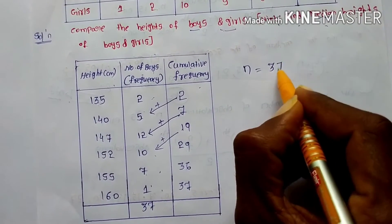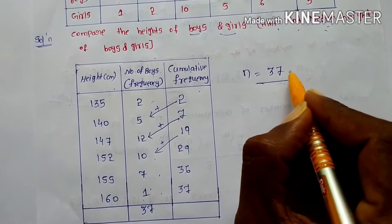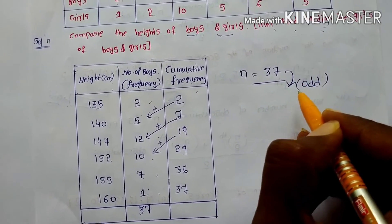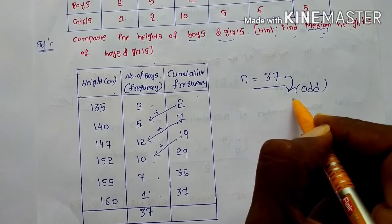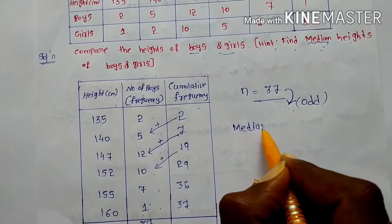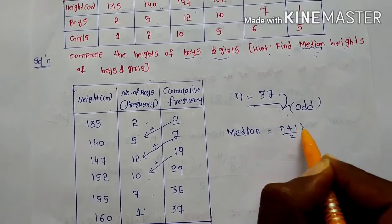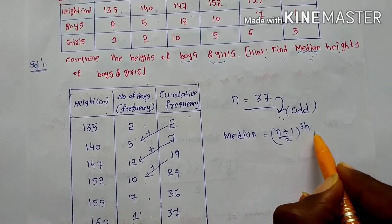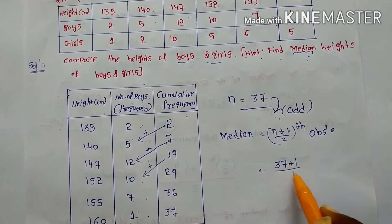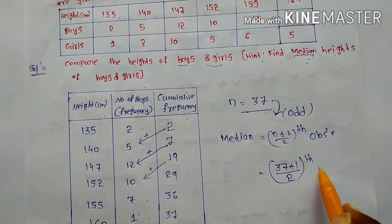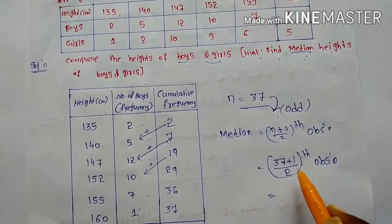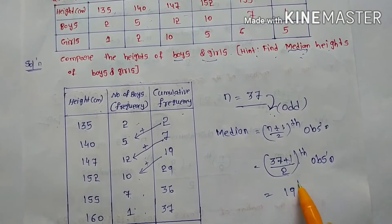n equals 37. Is it even or odd? It is odd. So we use the formula: Median = ((n+1)/2)th observation. That means (37+1)/2 = 38/2 = 19th observation. So we need to find the 19th observation.